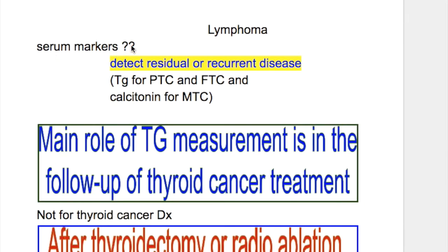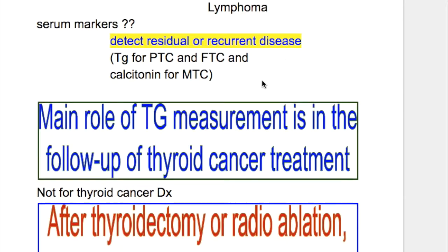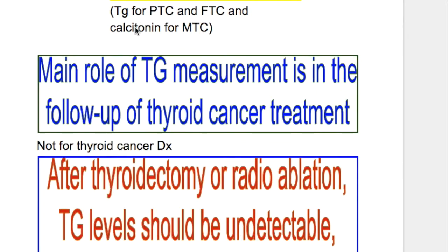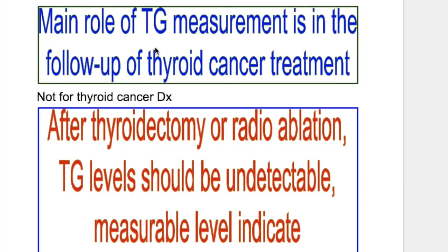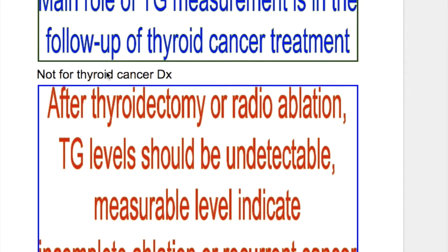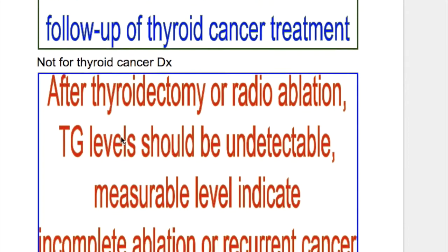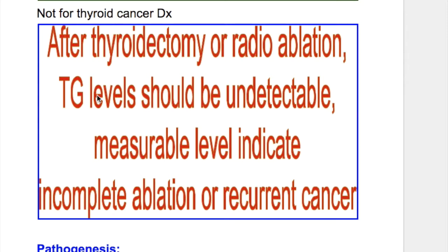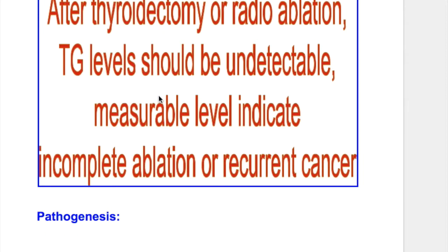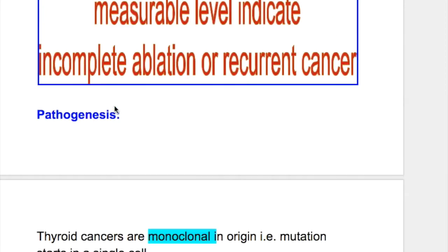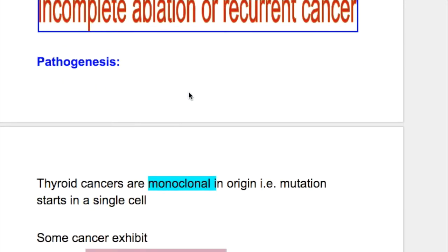Serum markers detect residual or recurrent disease. Thyroglobulin is used for papillary and follicular thyroid carcinoma; calcitonin is used for medullary thyroid carcinoma. The main role of thyroglobulin measurement is in follow-up of thyroid cancer treatment. After thyroidectomy or radioablation, thyroglobulin levels should be undetectable. Detectable levels indicate incomplete ablation or recurrence.